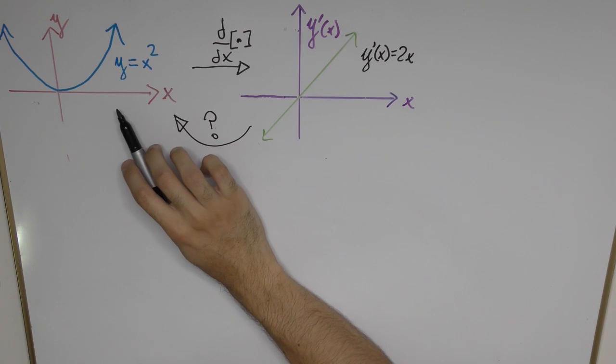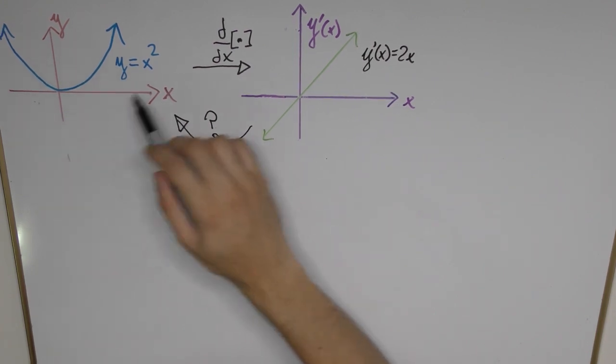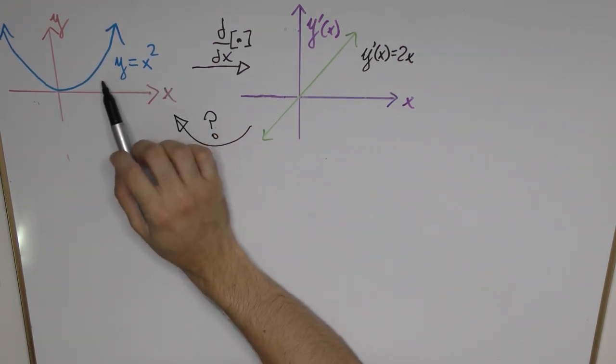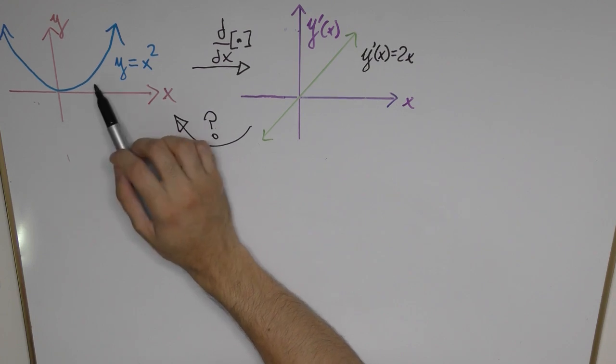Now you may recall from differential calculus that when you have a function such as y equals 2x squared, the main idea behind taking the derivative is to look at each point on x and just take the slope of that function.